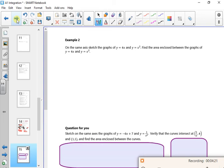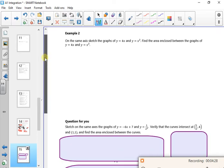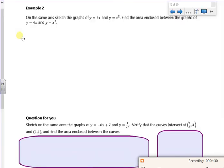So we'll come to the next page, which is an example here. So I'll do this example and then there's one for you. So it says on the same axis, sketch the graph of y = 4x and y = x². So we know, you can graph it on your calculator, can't you? That x² looks like that. And 4x looks like that.